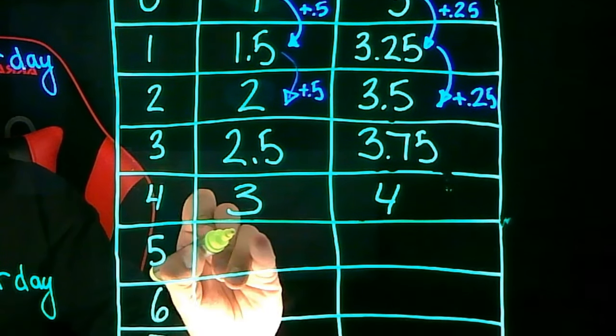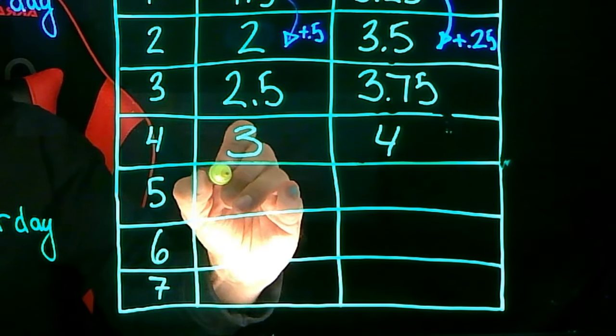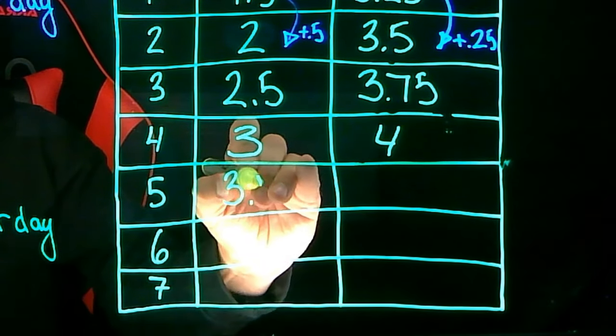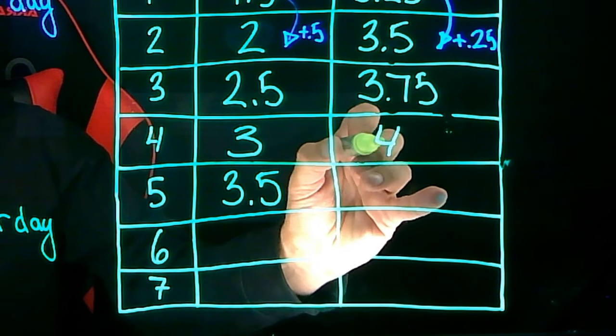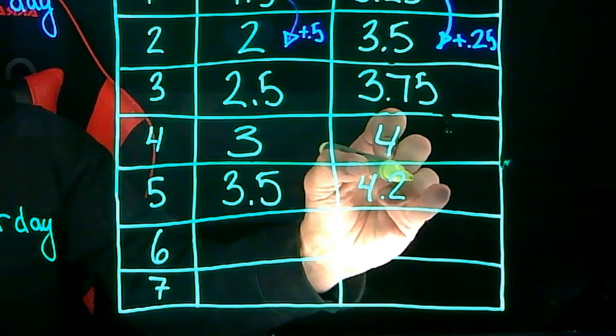On day five, plant A will have a height of 3 plus 0.5 or 3.5 inches. And plant B will have a height of 4 plus 0.25 or 4.25 inches.